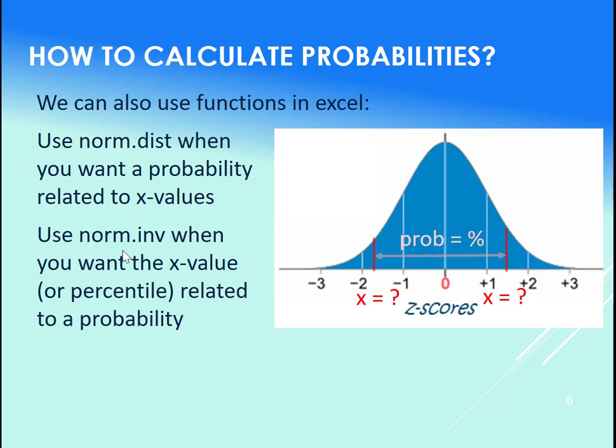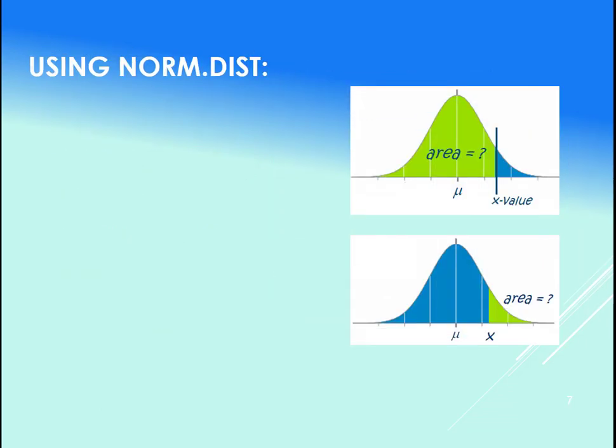And if you want the actual x values themselves and you're given the probability, then you would use the norm.inv. So if we're given this probability and we want the x values between those two areas or anything else, you would use your norm.inv. We're going to look a lot more at that later. Now using the norm.dist first, let's examine that first.